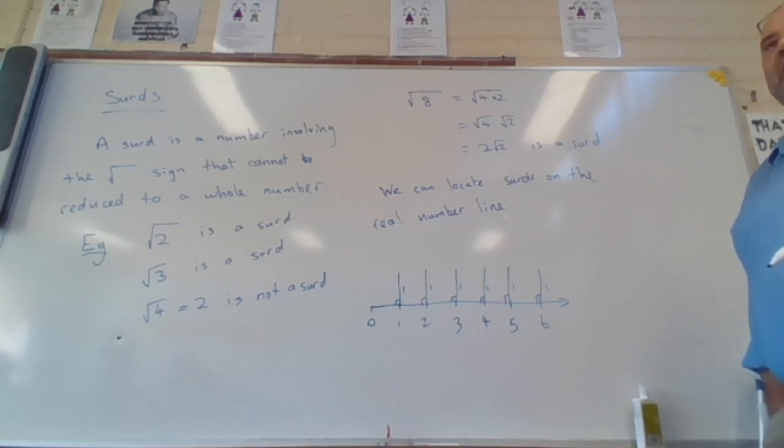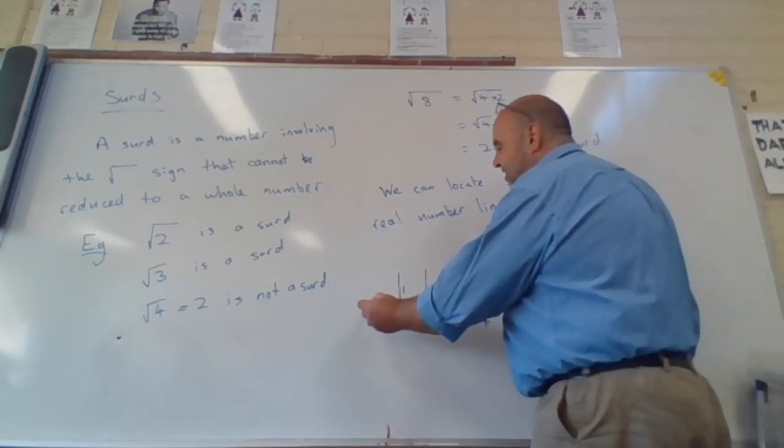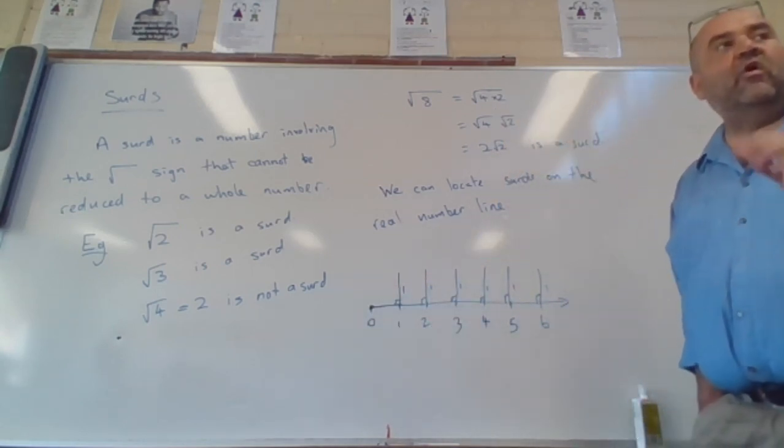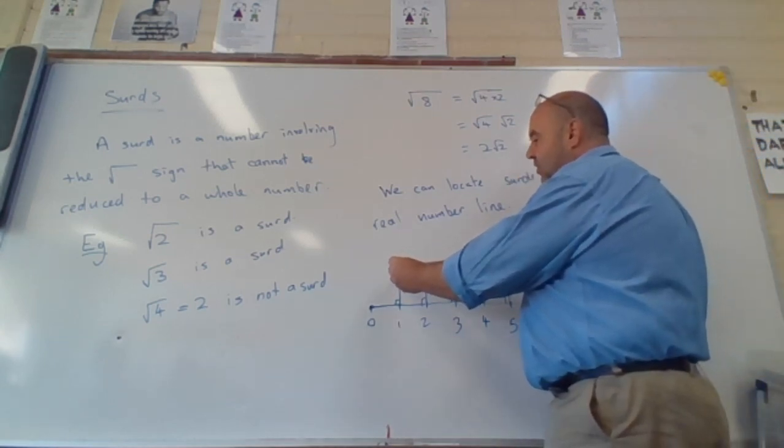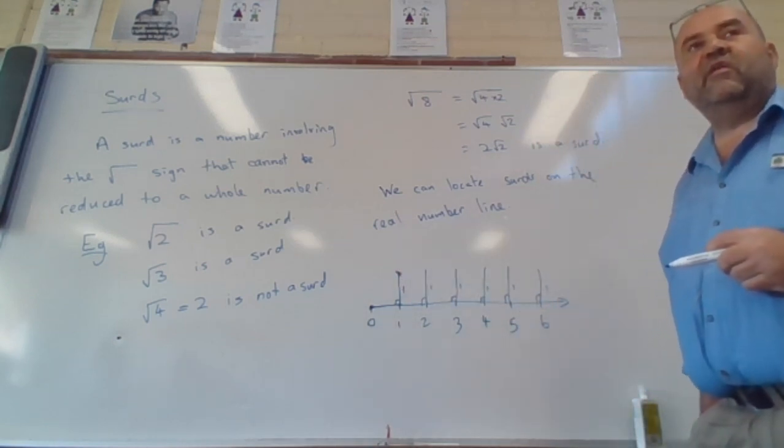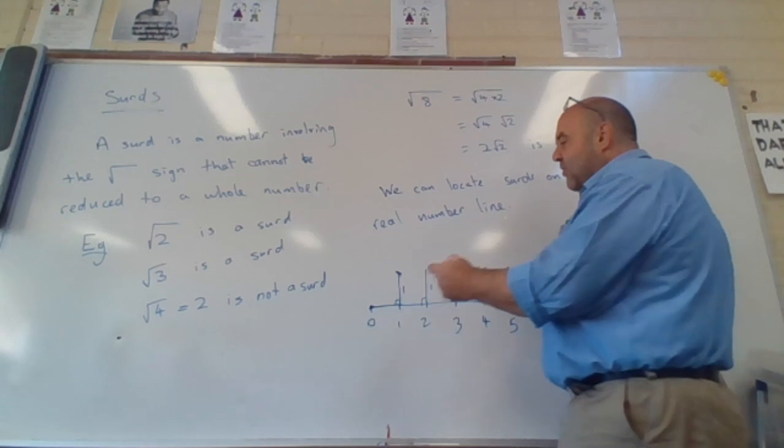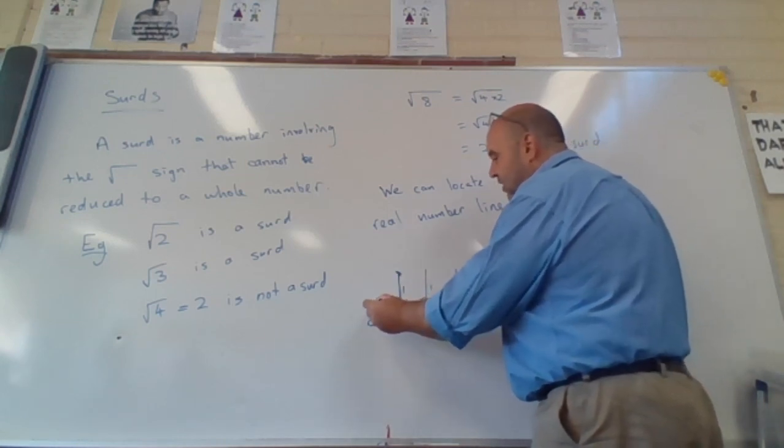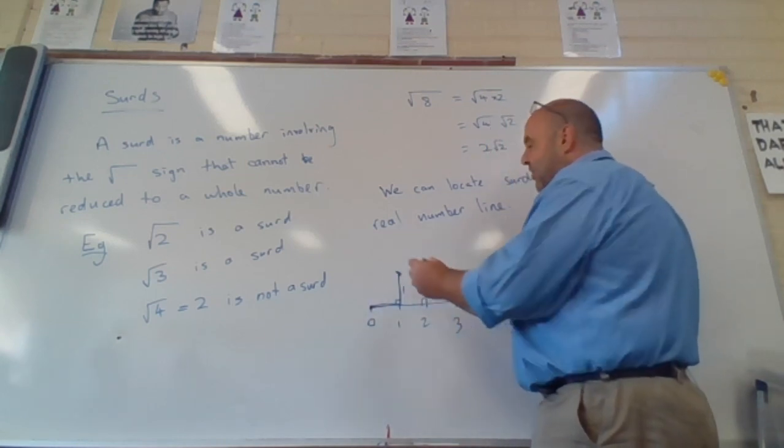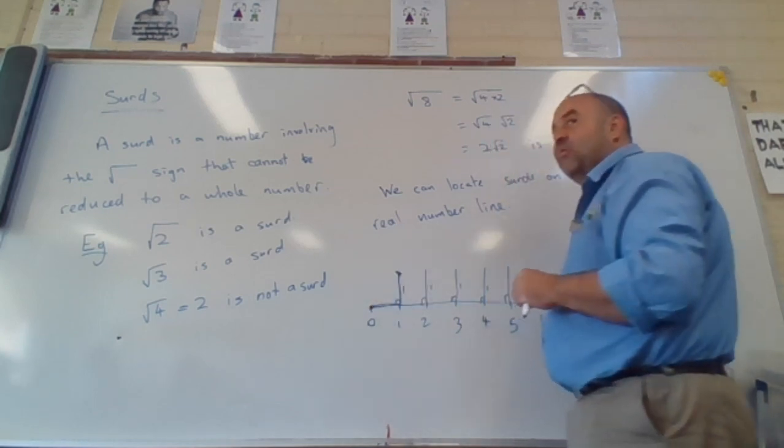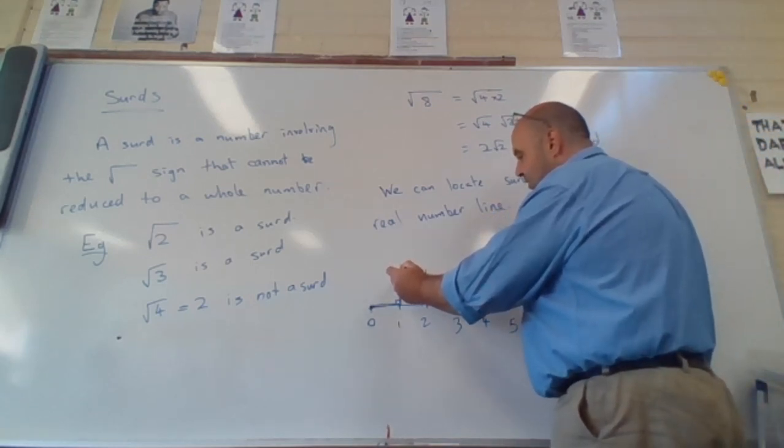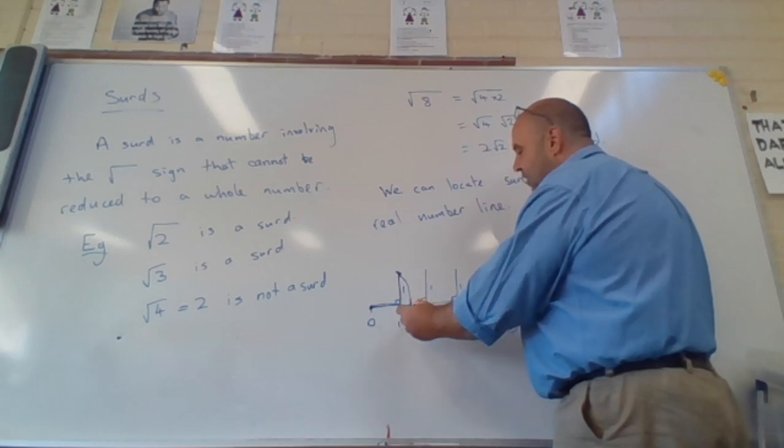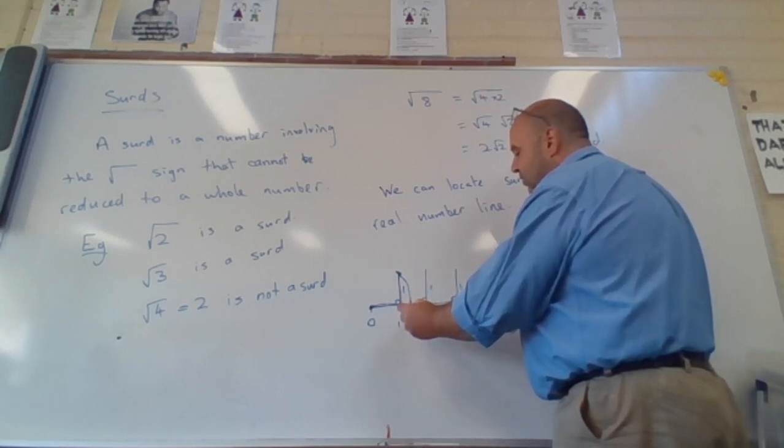If I get a set of compasses and I open my compasses up, I put the point of my compass down here at the origin and open up the pencil side of my compasses to the very top of that vertical there. Then Pythagoras tells me, because that's one unit there and that's one unit there, Pythagoras tells me that my compass will be opened at a distance of root two. So if I then come down with my compass and put a mark down there, that position there is the square root of two.